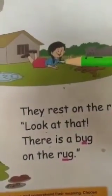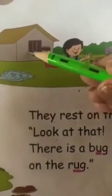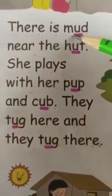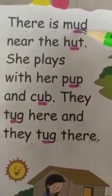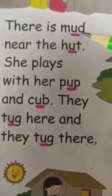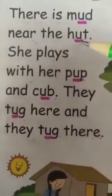In this picture you can see Goosey, pup, and cub. And here is mud near the hut. There is mud — M-U-D, mud. The M-U sound is 'uh': M-U-D, mud near the hut.